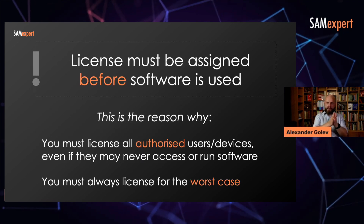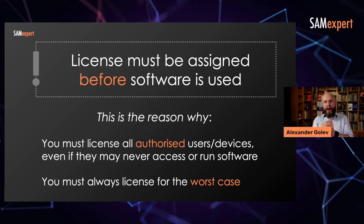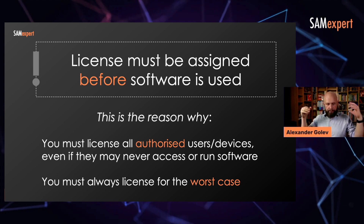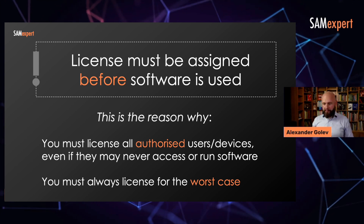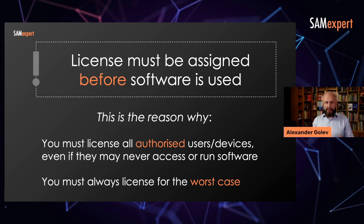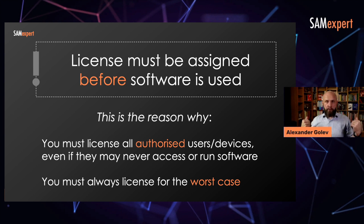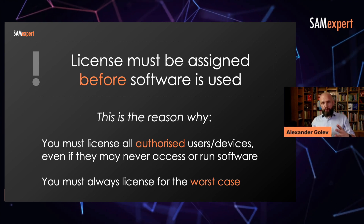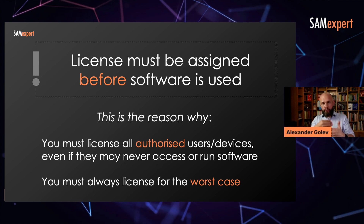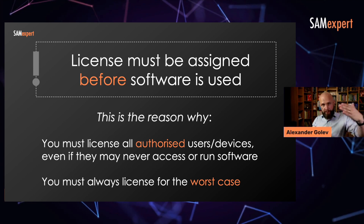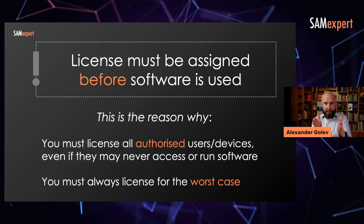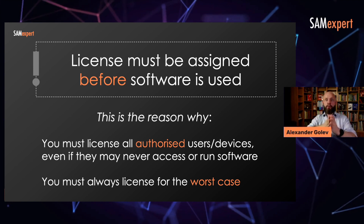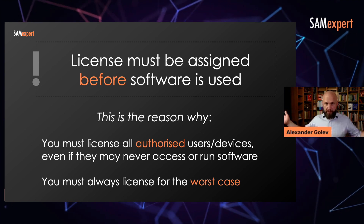First and foremost, this license must be assigned before software is used. Why is it important? You have people working from home. You work in a company with a thousand people. They have a thousand company devices and maybe other devices they use to access company services through VPN — they work from home because of COVID. If you do not restrict access to software accessed through your VPN to a limited number of devices or users, depending on the type of license, then you need to buy licenses for them all.